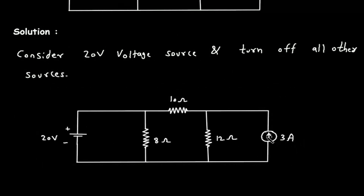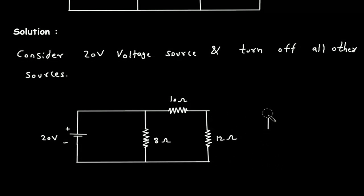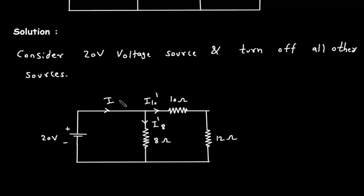If we turn off this current source, it will be an open circuit. Now, let's assume this is I10 prime, this is I8 prime, and this is total current I.